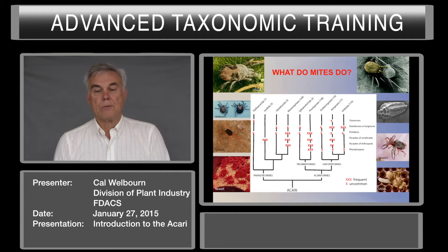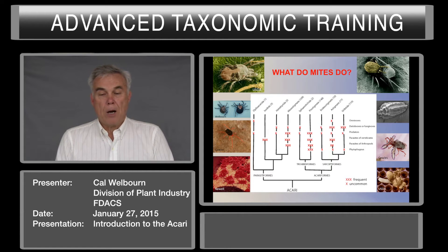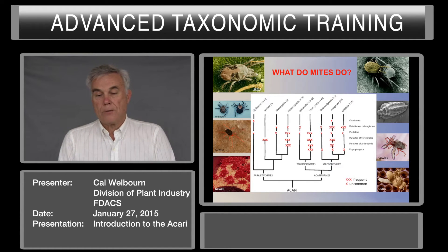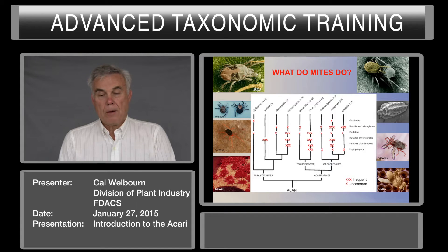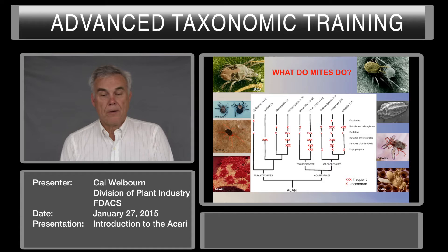What do mites do? They do just about everything. They range from omnivores to detritivores, fungivores, predators, parasites of vertebrates, parasites of arthropods, and phytophagous mites. This chart shows you just the range of what some of them do.